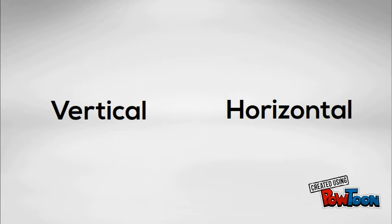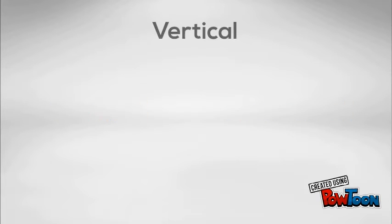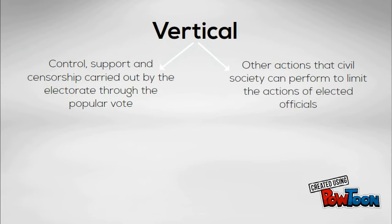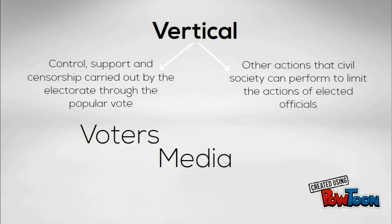Guillermo O'Donnell broadened the definition of accountability by dividing it into vertical and horizontal accountability. Vertical accountability expresses the concern for the control, support, and censorship carried out by the electorate through the popular vote, as well as other actions taken by civil society to limit the actions of elected officials. This involves the voters, the media, and civil society organizations.